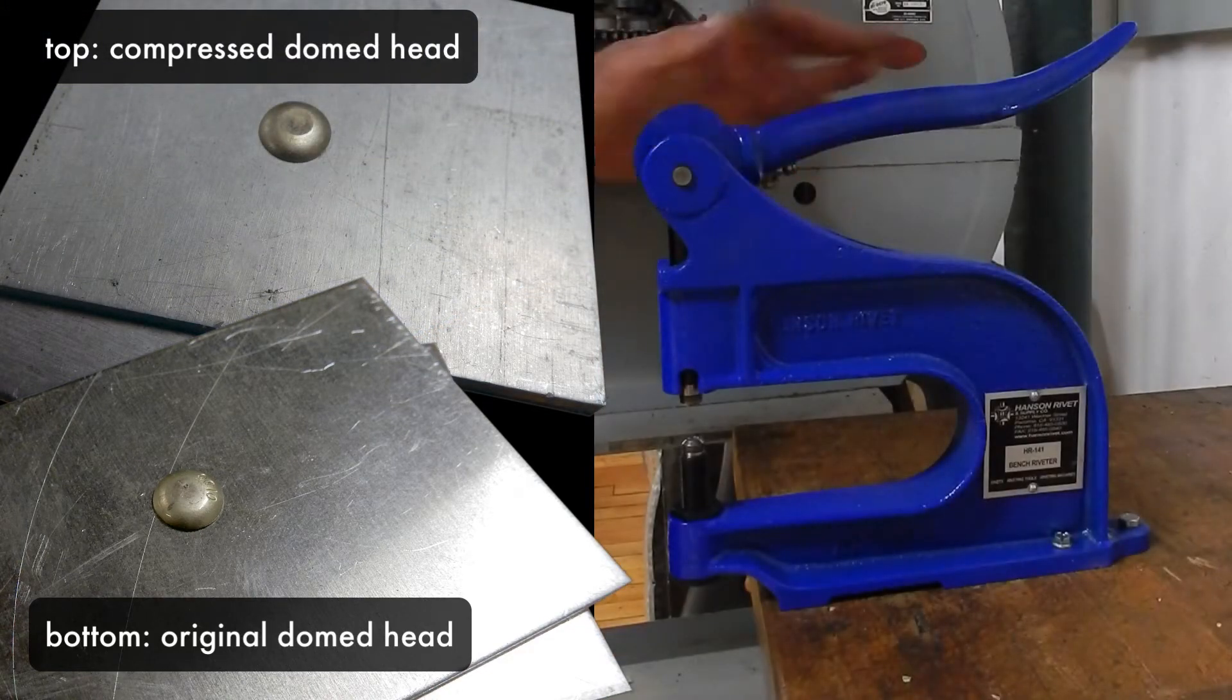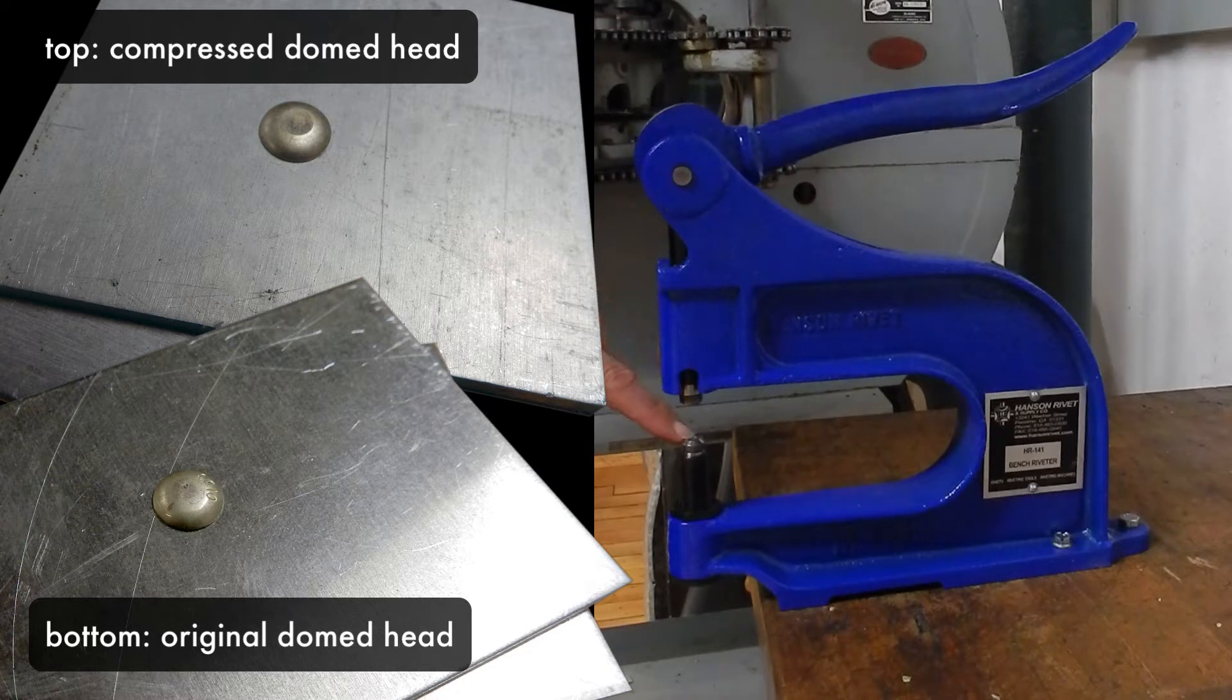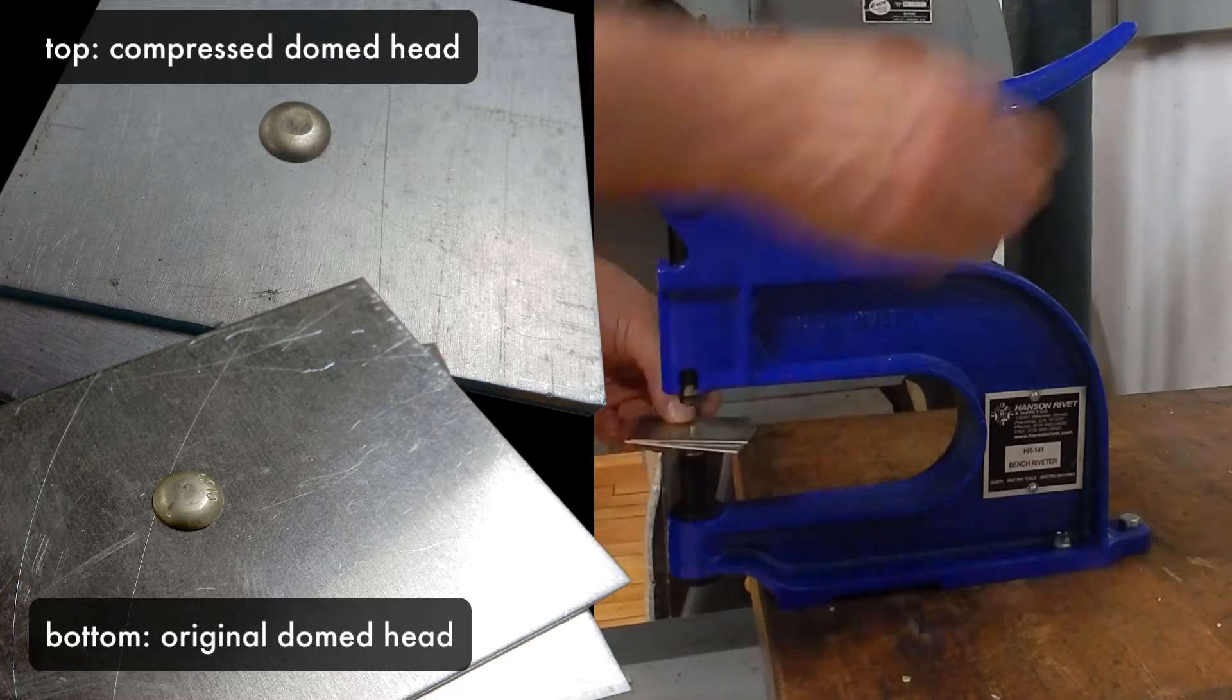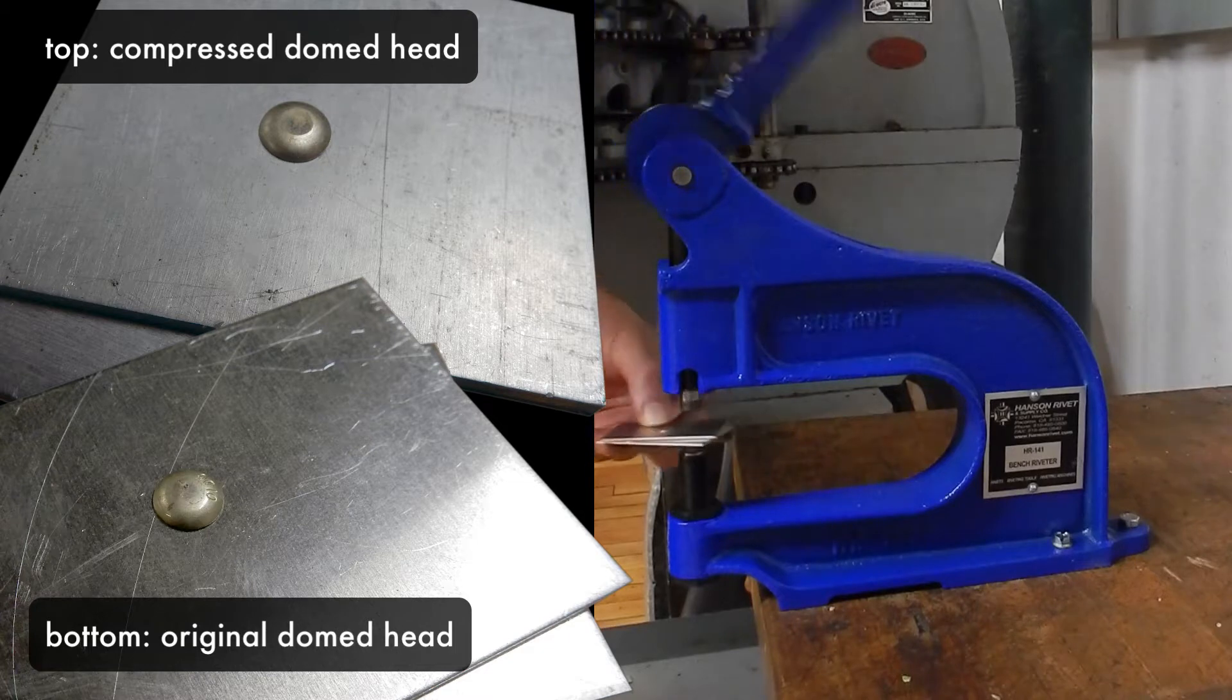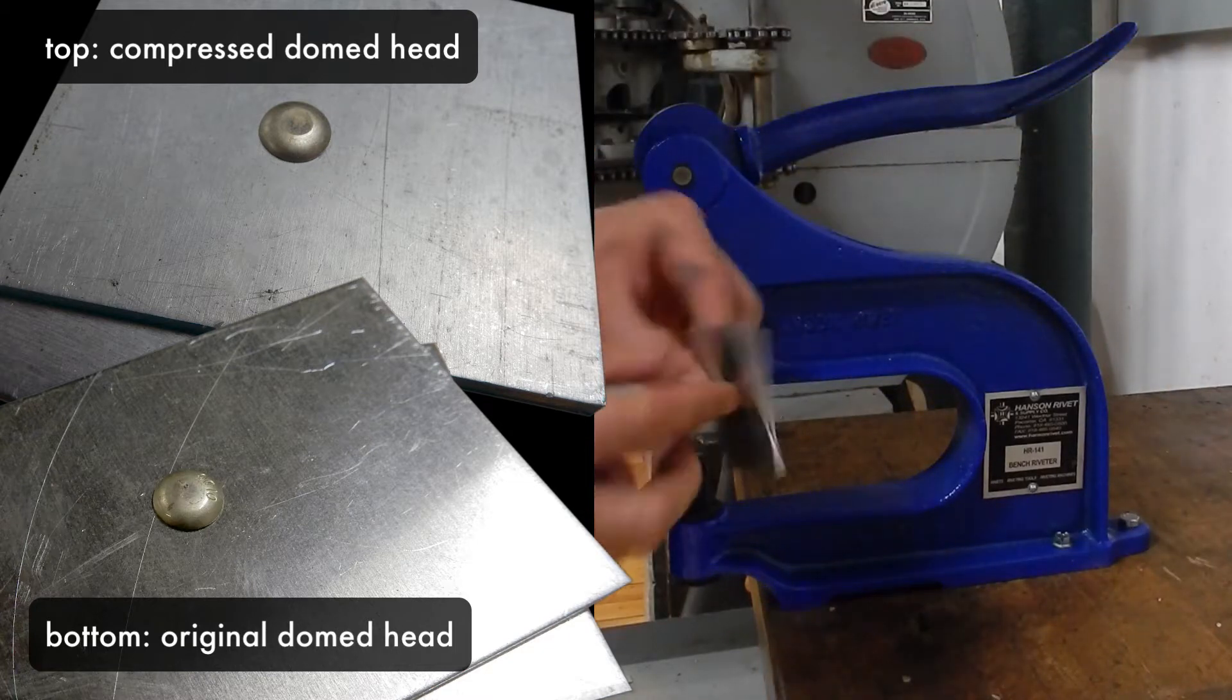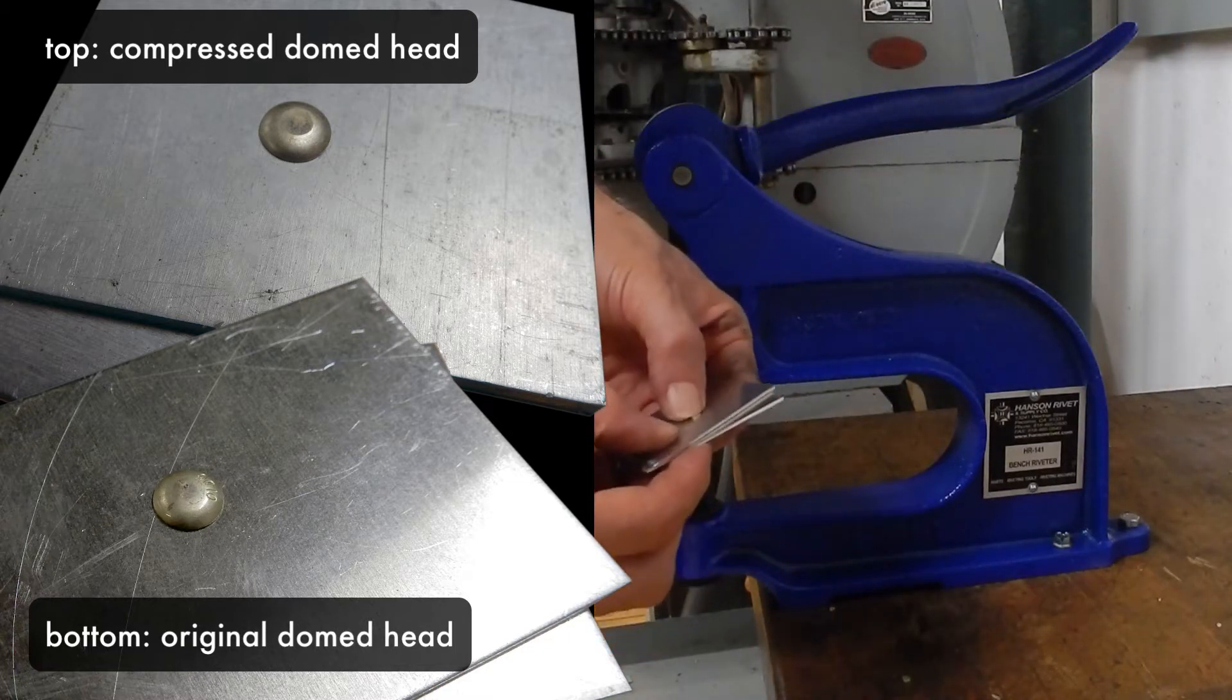Right now, this press is set up with a concave polished surface on the bottom and a concave polished surface on the top. So I can put a rivet that has a domed head in there and compress it, and I will end up with a domed surface on both sides, which is super elegant.